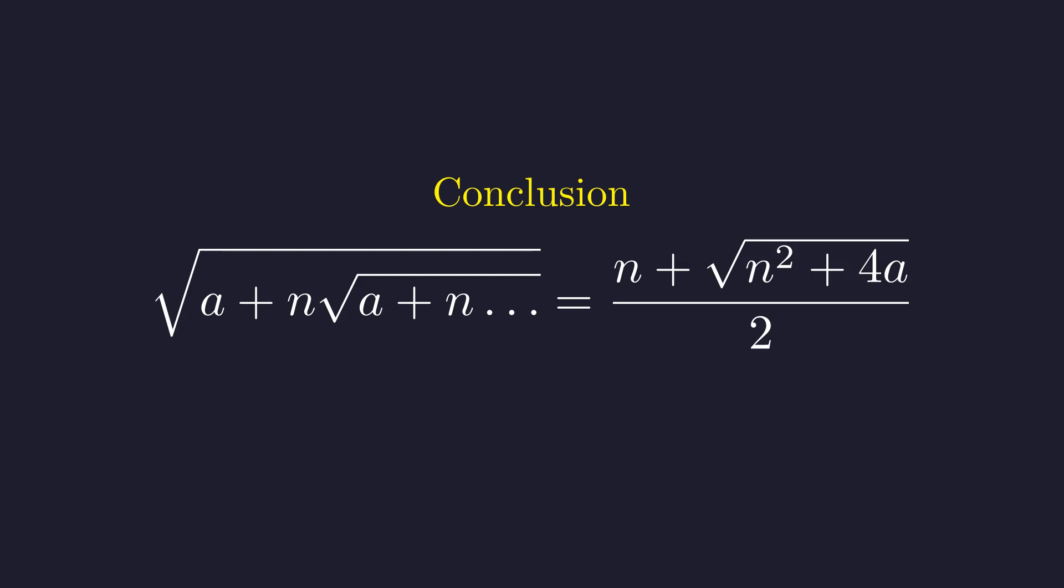Then by exploring what happens when we change the parameters, we found connections to the golden ratio and discovered a universal formula. That's really what math is about. It's not just about getting the right answer. It's about seeing the deeper patterns that connect seemingly different ideas. Sometimes the most intimidating problems are hiding the most elegant solutions.